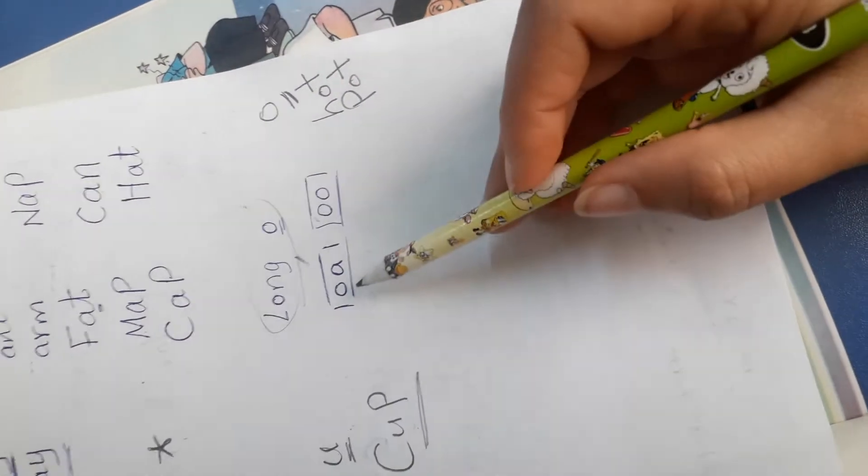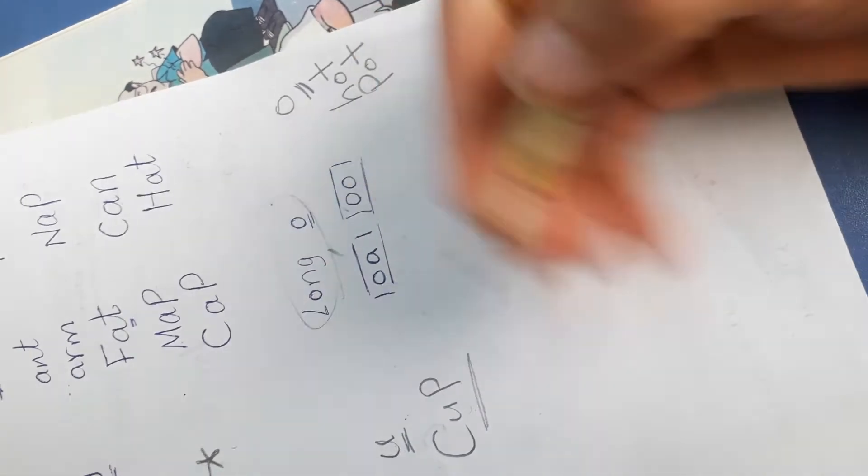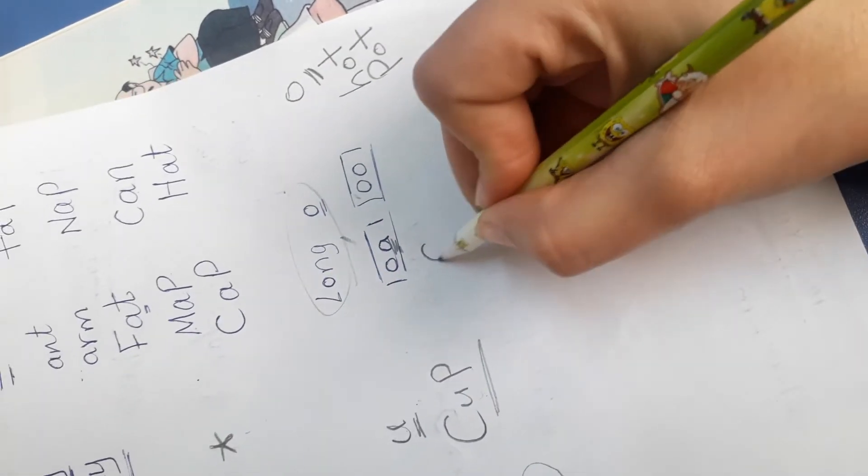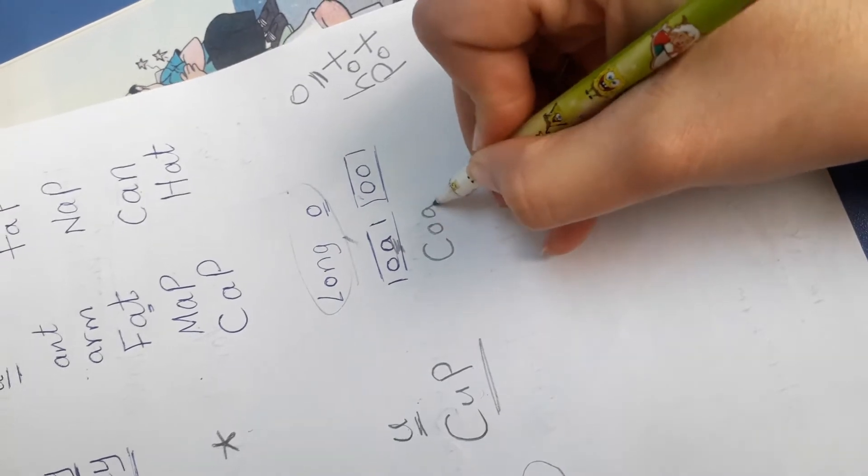What about long o? Long o will contain, or will appear when we have o and a like this, like the word 'coat.'